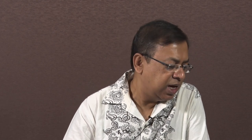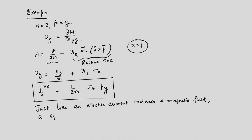Just as an electric current produces a magnetic field, a pure spin current also induces an electric field. This is quite an important result: a spin current creates or produces an electric field, and the spin current experiences a force because of this electric field.